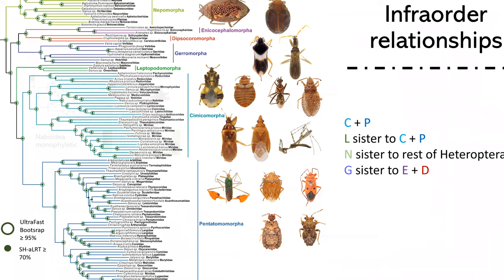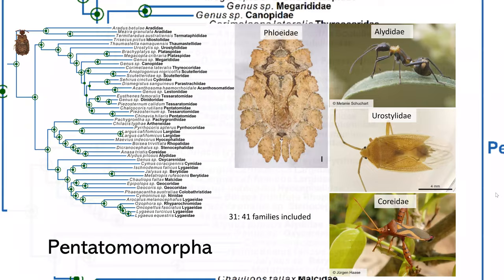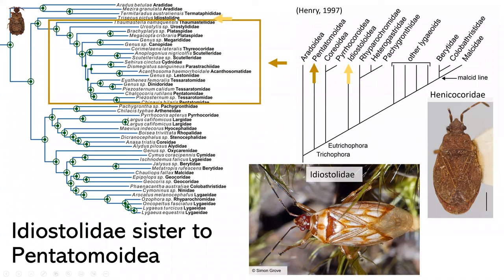Now looking at Pentatomomorpha, we included 31 of the 41 families. We found that Ideostelloidea, which you can see indicated by the yellow arrow, is sister to the rest of Pentatomomorpha.